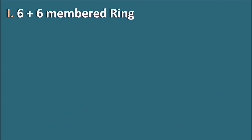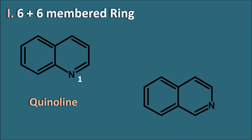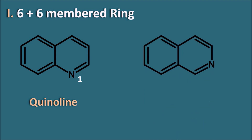Now let us go with the 6+6-membered ring systems. This ring system with nitrogen is commonly known as quinoline, where nitrogen is present at the first position. If the position of nitrogen is changed so that nitrogen is at the second position, it is called isoquinoline. Quinoline is an important ring system present in antimalarials like chloroquine and mefloquine, and isoquinoline is present in the smooth muscle relaxant papaverine.